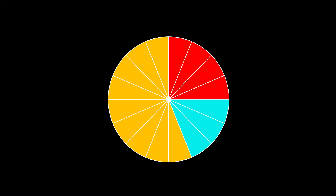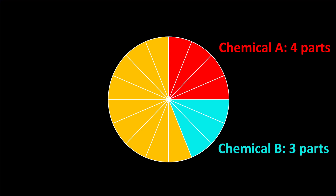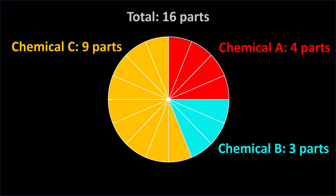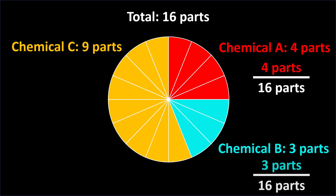One way to solve this problem is to imagine the container shaped like a pie chart. Chemical A would fill 4 parts, chemical B would fill 3 parts, and chemical C would fill 9 parts. When we add all the parts, the total is 16. So we can write each chemical's part as a fraction of the total number of parts, then use the cross-multiply and divide method to solve for the volume of each chemical.